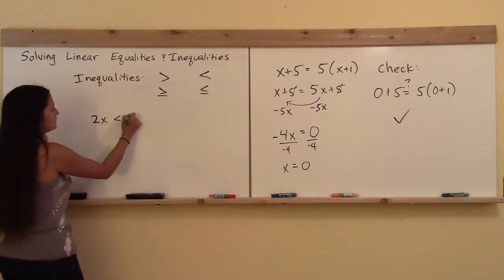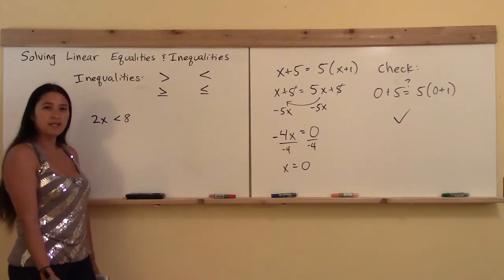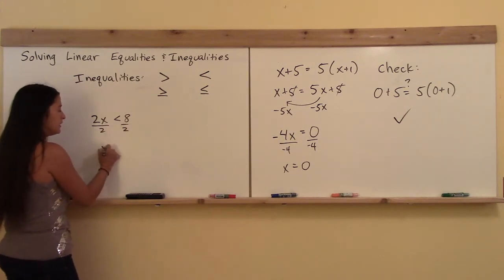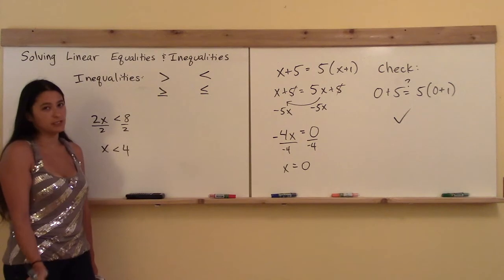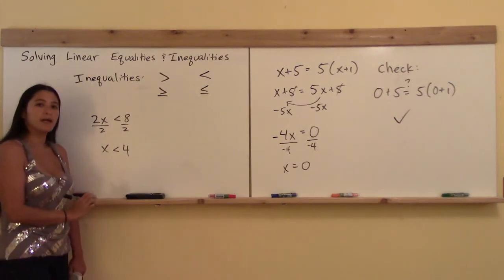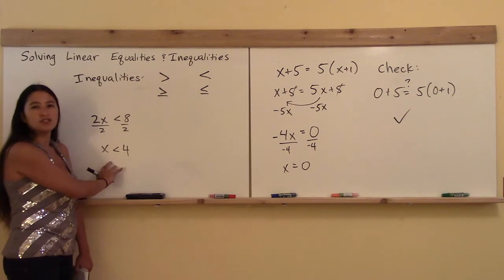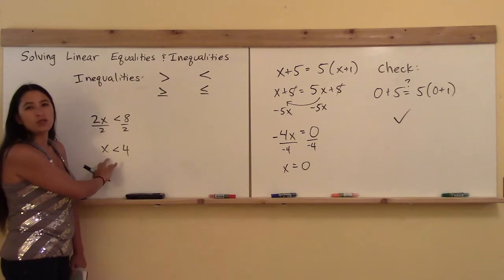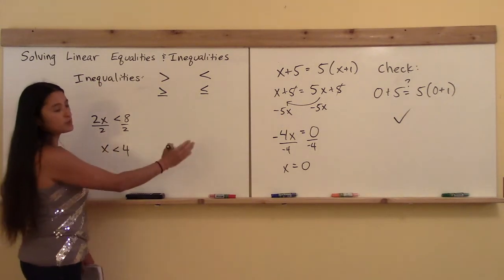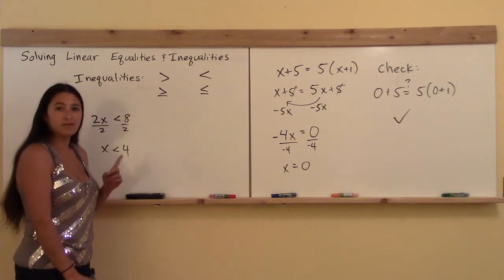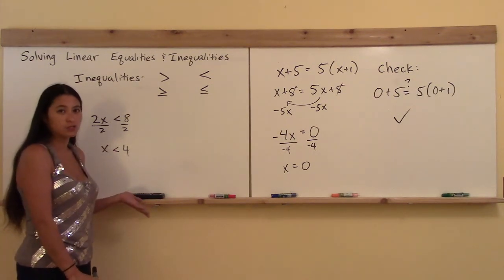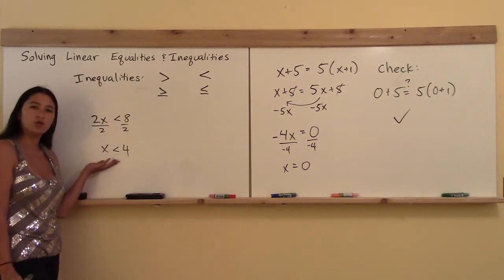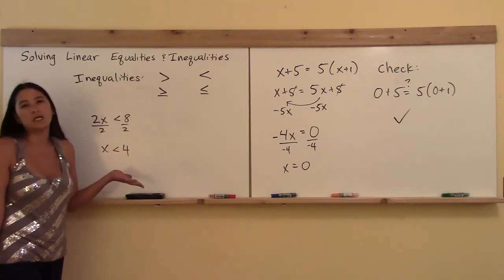I'll start with a simple example. Maybe we've got 2x is less than 8. If 2x is less than 8, then what can x be? I'm just going to divide both sides by 2, and x is less than 4. That one was really simple with the algebra. But keep in mind that when you get an answer for a linear inequality, this is actually more than one value for x. All this time with equations we've been getting one exact value. In this case, x is less than 4 — so what is it? It could be 3, 2, negative 17. You really want to visualize the solutions to inequalities on a number line.